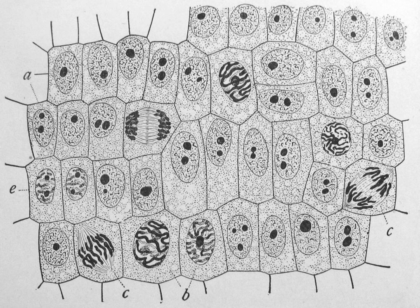A fimbria, also known as a pilus, is a short, thin, hair-like filament found on the surface of bacteria. Fimbriae, or pilae, are formed of a protein called pilin and are responsible for attachment of bacteria to specific receptors of human cells. There are special types of specific pilae involved in bacterial conjugation.